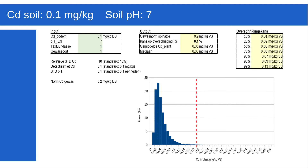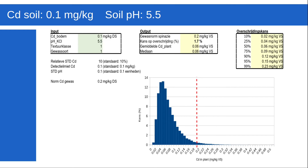From that we can determine the chance of exceedance if we were to grow spinach on that particular soil. These illustrations show the model output for a soil containing low cadmium — only 0.1 milligram per kilogram — looking at the effect of pH. At pH 7, there is virtually no chance of exceeding the level of 0.2 mg/kg, with only 0.1 percent estimated. As pH decreases to 6.5, this chance increases to 0.4 percent — still a very small risk. And if pH decreases further, the risk of exceedance increases to an estimated 1.7 percent.